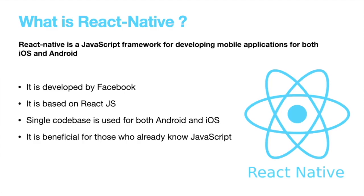So the first question is: what is React Native? React Native is basically a JavaScript framework which is used to develop apps for both Android and iOS. The biggest advantage of React Native is that we can use a single code base to write applications for both platforms. It is developed by Facebook and it is based on React JS.